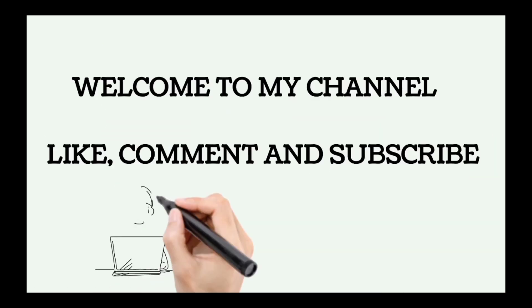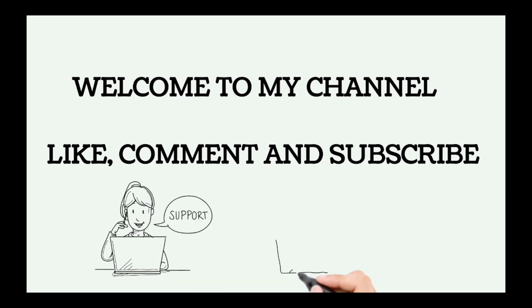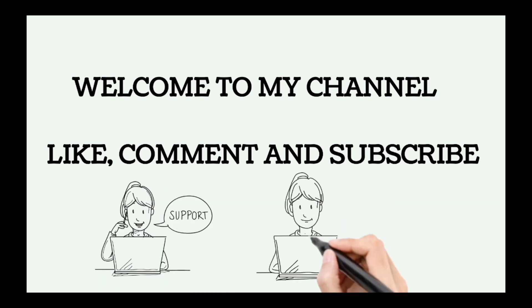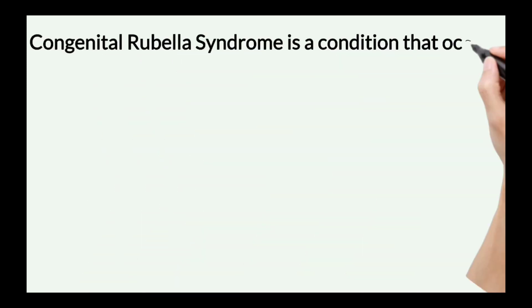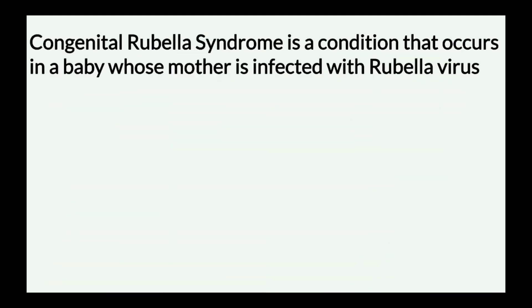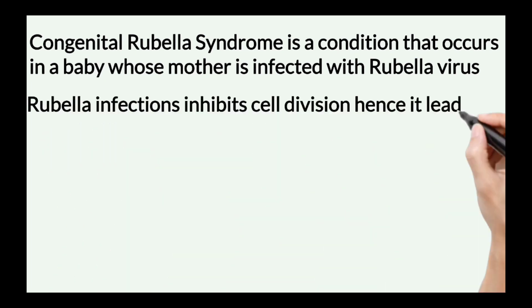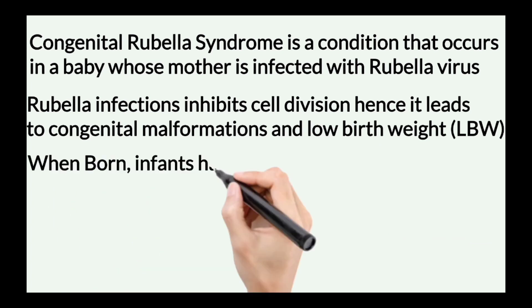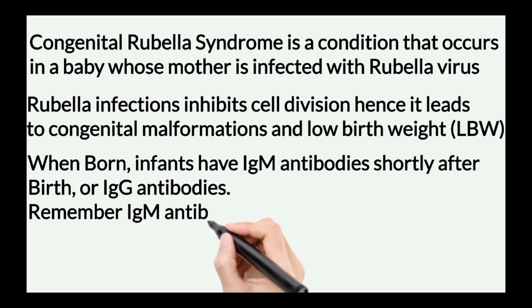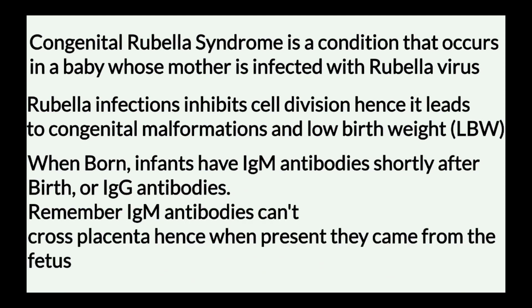Congenital Rubella Syndrome is a condition that occurs in a baby whose mother is infected with Rubella virus. It is an infection that may affect cell division, hence it leads to congenital malformations and low birth weight.